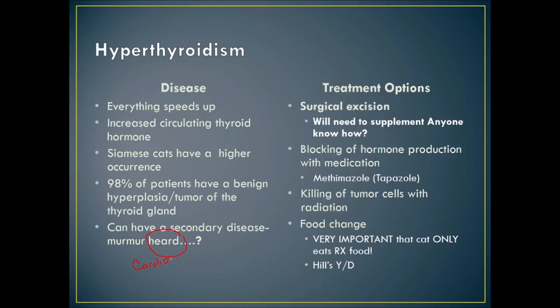We can kill tumor cells with radiation, which is probably one of the best treatment options. If an animal also has kidney disease, we can change to Hill's y/d food — which is supportive of the kidneys and reduces iodine — but the cat can only eat that prescription food.